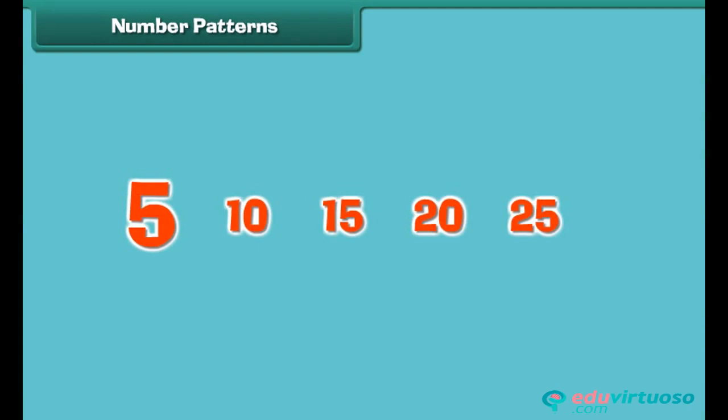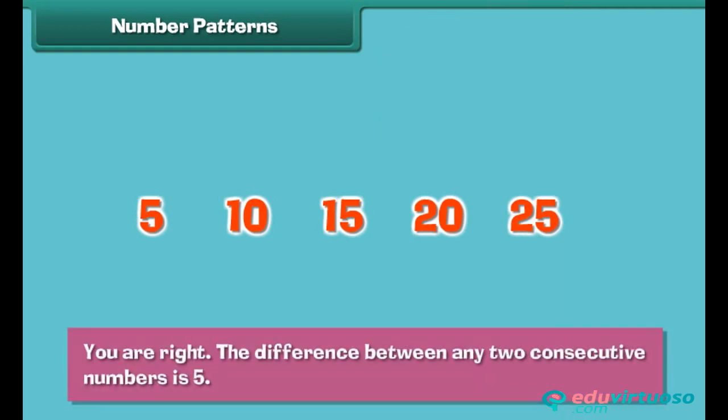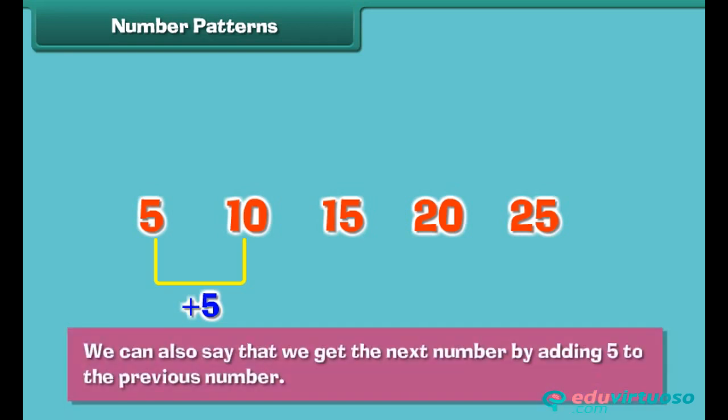Let us look at another number pattern. Five, ten, fifteen, twenty, twenty-five. Can you see why this arrangement of numbers is a pattern? You are right. The difference between any two consecutive numbers is five. We can also say that we get the next number by adding five to the previous number.